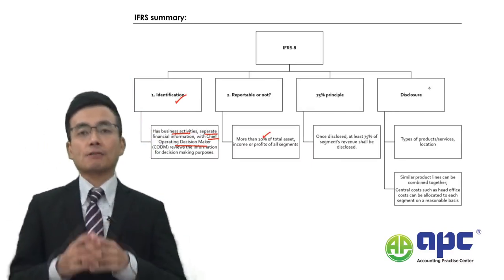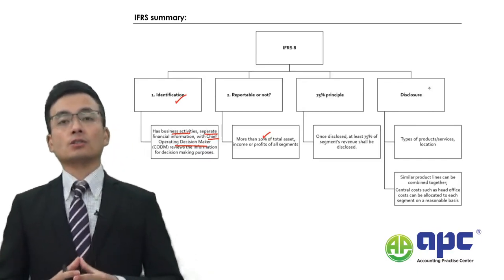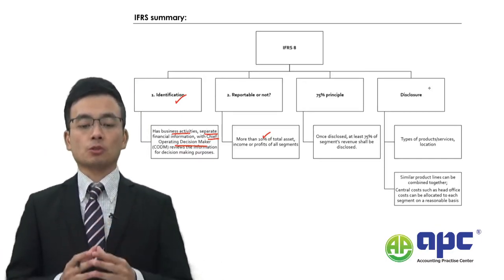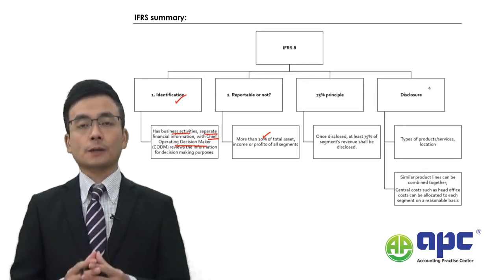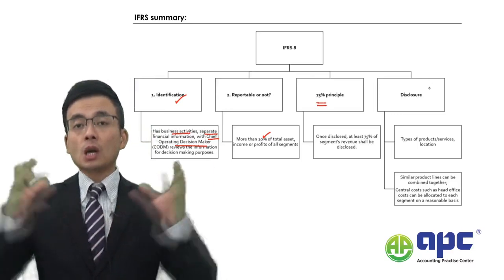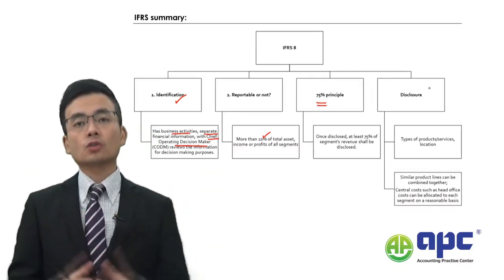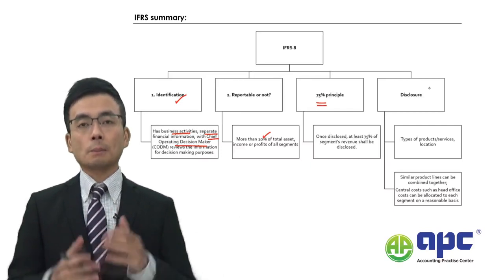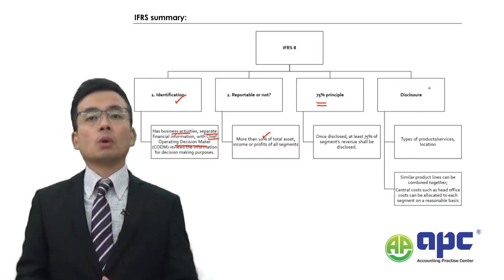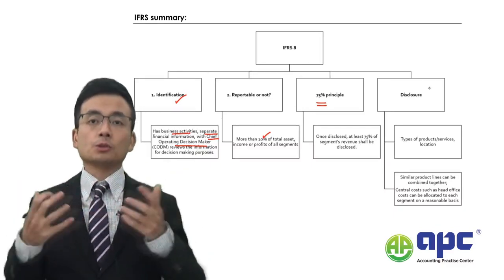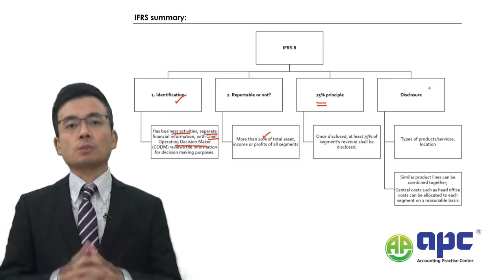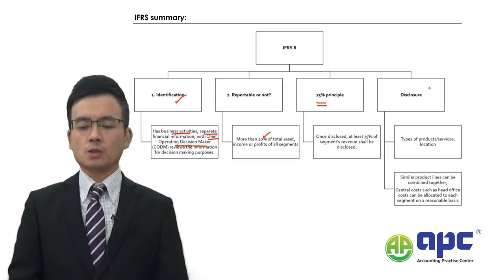You do not need to report a segment unless it meets the 10% criteria. If a product line's total assets or total income accounts for more than 10% of the group's total, that segment is reportable and must be disclosed separately. When reporting separately, you also need to meet the 75% principle — bringing in all other segments not meeting the 10% criteria until you disclose at least 75% of the total income of all segments.